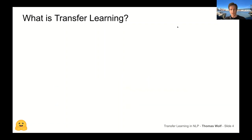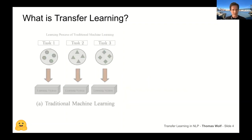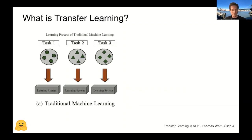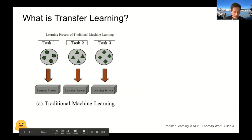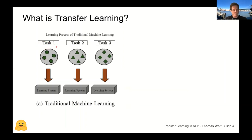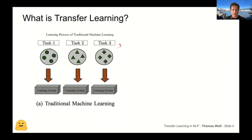What is transfer learning? The usual way we train machine learning models is: we have a first task, we gather a dataset, randomly initialize our model, train it, and use it in production. If we have a second task, we gather a new dataset and train from scratch again. We do that again for a third task.